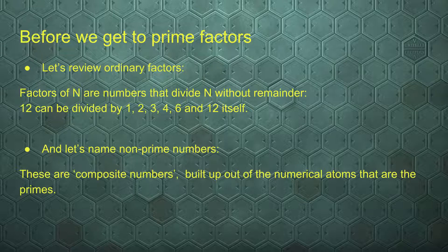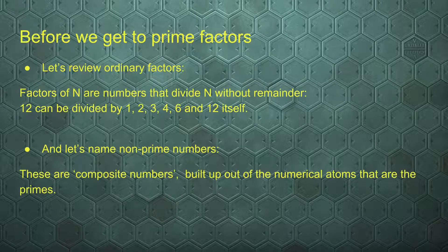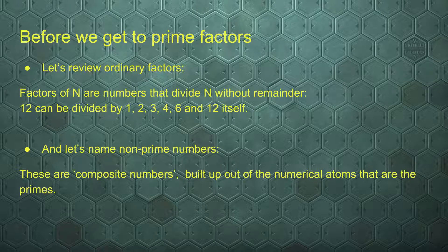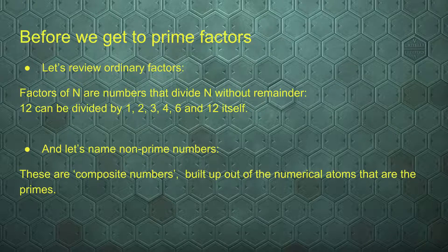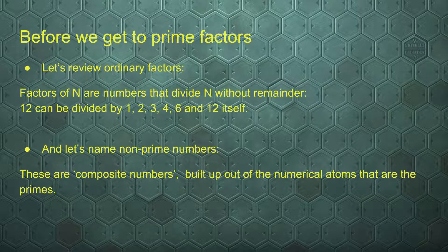Let's look at ordinary factors first. Factors are any number that divide n without leaving a remainder. So 12 can be divided by 1, by 2, by 3, by 4, by 6, and by 12 itself. Those are its ordinary factors.